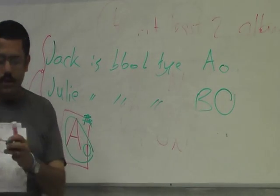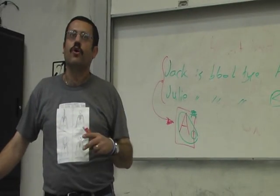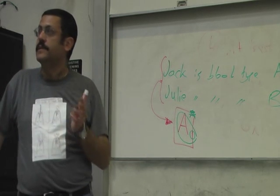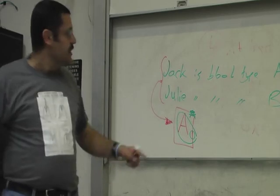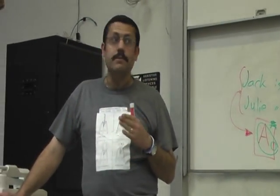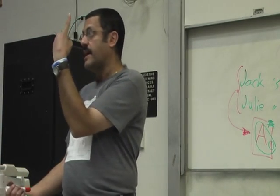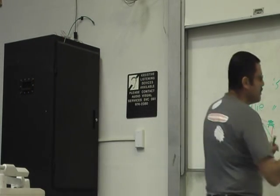So now I can tell you what's the likelihood that they'll have two AB children in a row? Given all that we talked about, what's the probability that, regardless of sex of the child, they'll have an AB child twice in a row? It's gonna be 1/16th, right? Why?